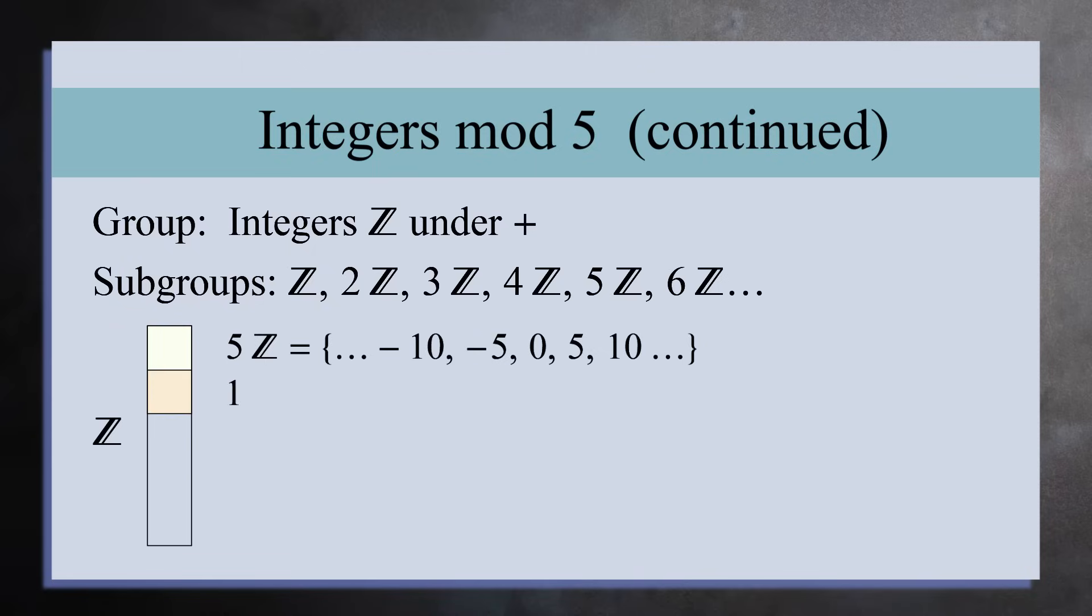The number 1 is not in the subgroup, and if you add 1 to every number in the subgroup, you get a new set, the set of integers with a remainder of 1 when you divide by 5. We'll denote this set by 1 plus 5Z.